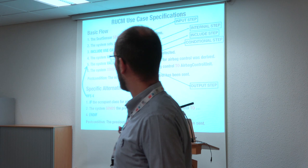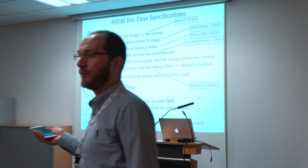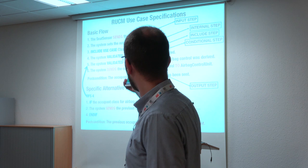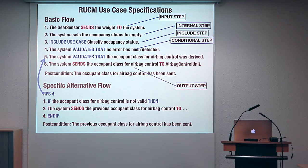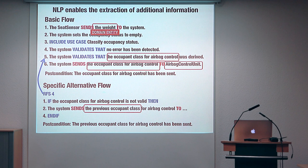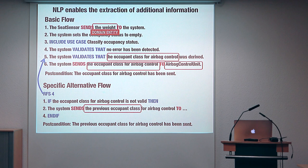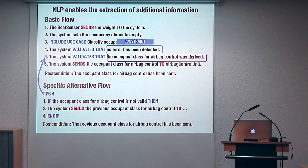The format also includes a way to specify alternative flows — executions that are performed when one of those conditions does not hold. What we do with this kind of specification is to execute natural language processing — very basic natural language processing. What we do is to automatically identify the noun phrases. In the context of requirement specification, a noun phrase is an entity of the system. Furthermore, all the sentences that follow the keyword 'validates that' are basically the constraints that the system is going to check at that time.